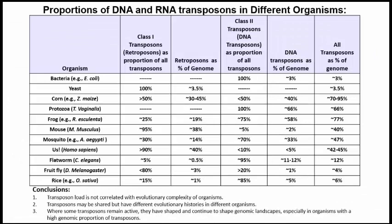This table highlights the fact that in eukaryotes, transposons can range from as little as 3% of a bacterial genome to as much as 45% to even 95% of eukaryotic genomes. In fact, at 4% and 6% of the genome, transposons in Drosophila, the fruit fly, and rice respectively, are at the lowest proportions.